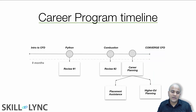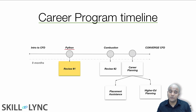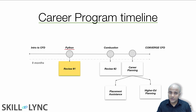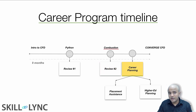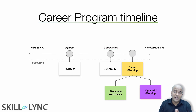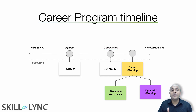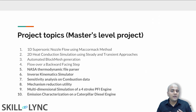Let's talk about the career program timeline. You will initially start with Introduction to CFD, then take the Python course. Just before you start the Python course we will do your first review, where we'll be able to add four projects to your resume. After your Python course, just before the combustion course, we'll do a second review — you'll have completed around six projects by then. Once you start your combustion course, career planning begins: we'll help with placement assistance or higher education planning, depending on what you want.